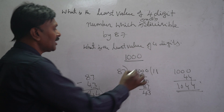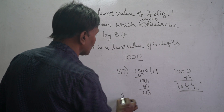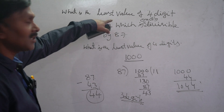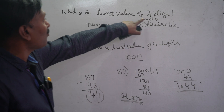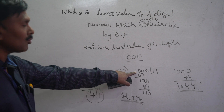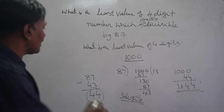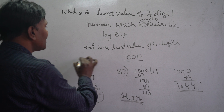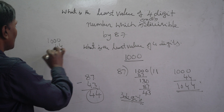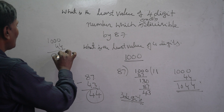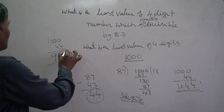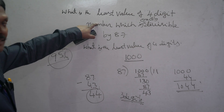But if you subtract 44 from 1000, it will become a three-digit number. You should remember: don't do that. Our question asks for a four-digit number. 1000 minus 44 equals 956, which is a three-digit number. So that answer would be wrong.